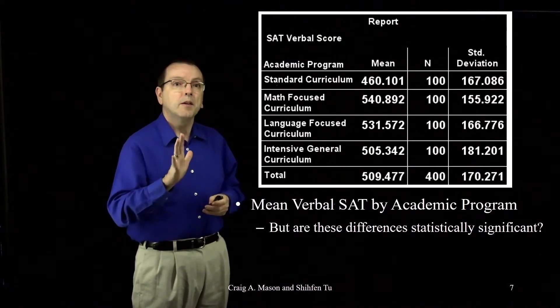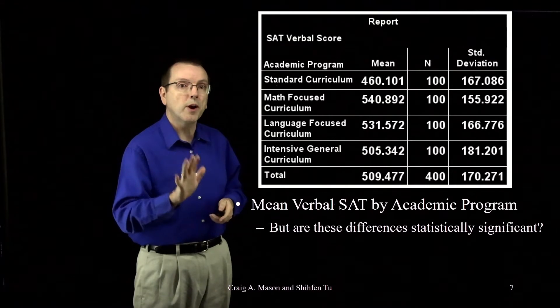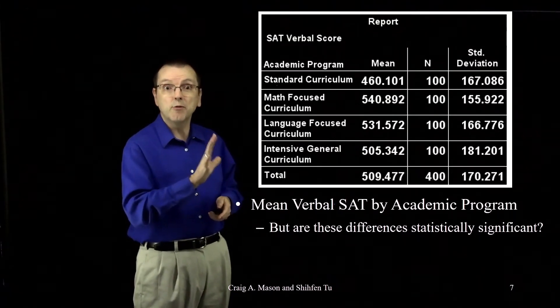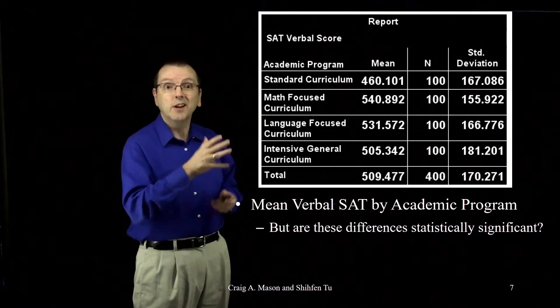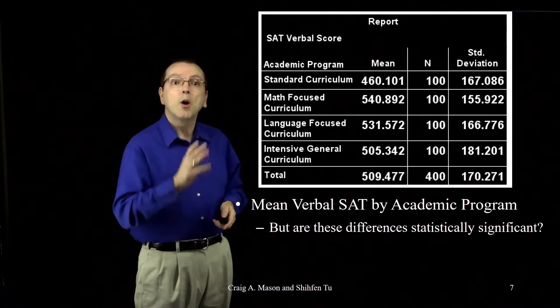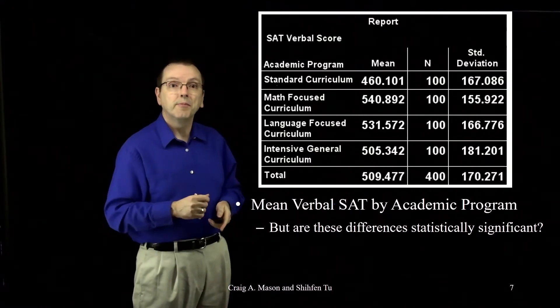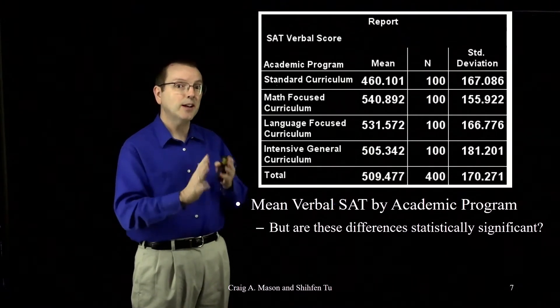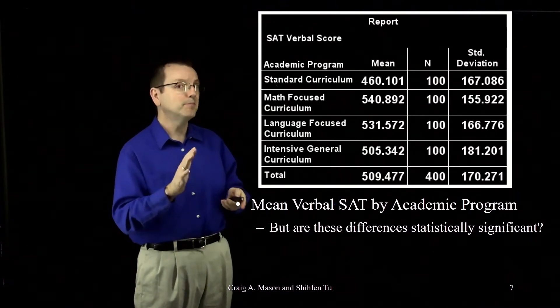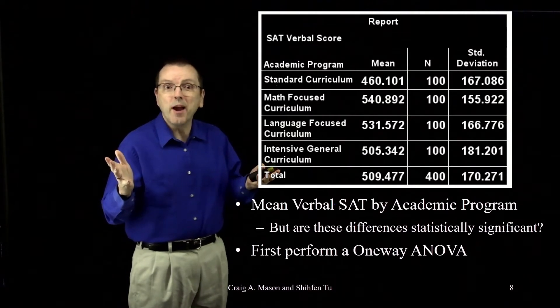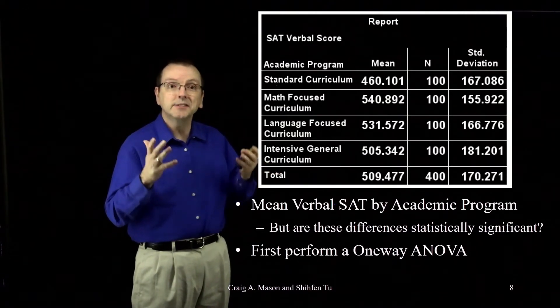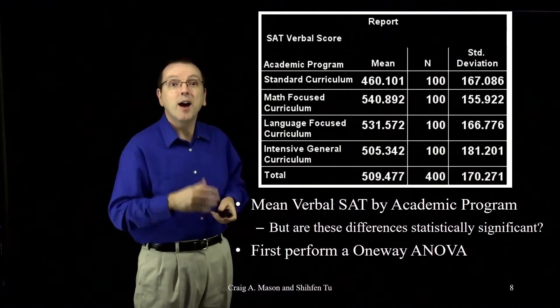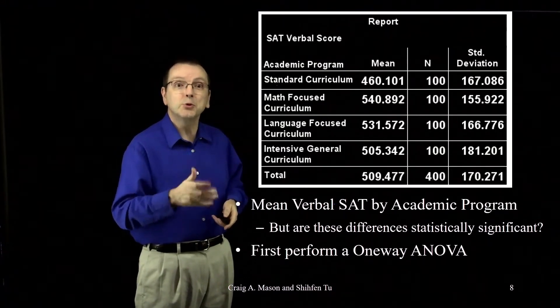If we ignore multiple regression for a moment and I want to test whether the population means for these four groups are equal based on these samples, what test would I do? I have four groups, a continuous outcome variable. I could do an ANOVA, right? A one-way analysis of variance. And in fact, if it was this simple, I probably would just do an ANOVA.